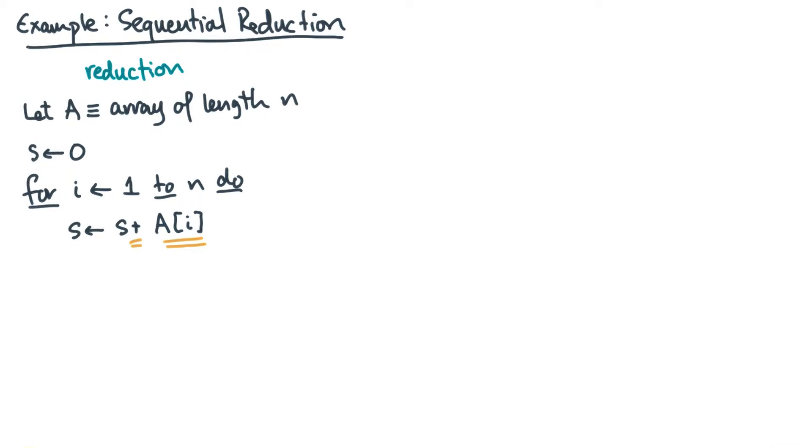Here's how the DAG for this computation might unfold. Let's start with iteration one, and we need to load A sub one and then perform the addition. So in the DAG, there will be a node for A sub one and a node for the addition. And there would also be a dependence edge since the addition can't start until the load is complete.